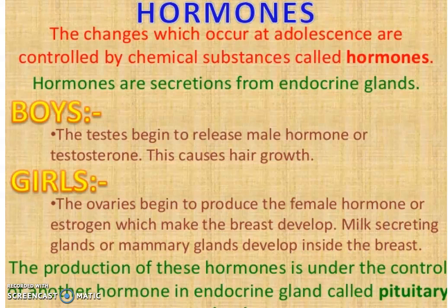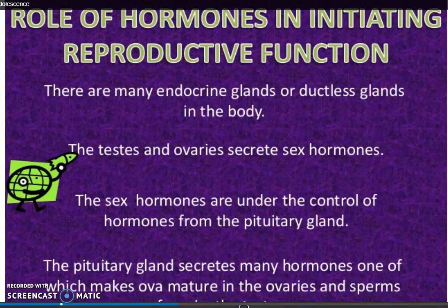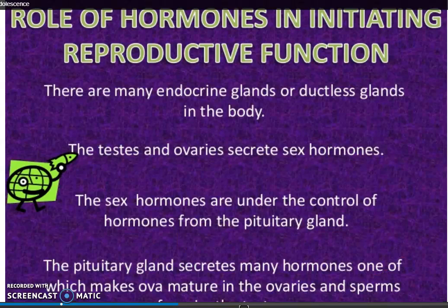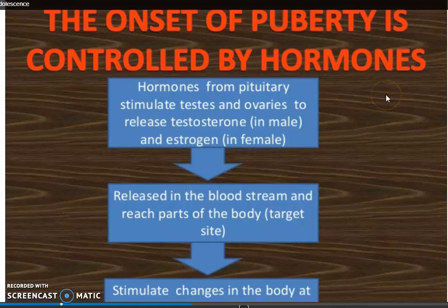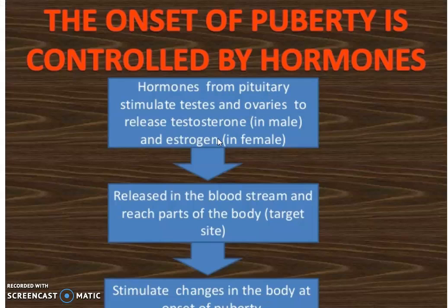The pituitary gland controls the testes, and the testes and ovaries secrete sex hormones. We have to study the role of hormones in initiating reproductive function. The onset of puberty is controlled by hormones — hormones from the pituitary stimulate the testes and ovaries to release testosterone and estrogen.